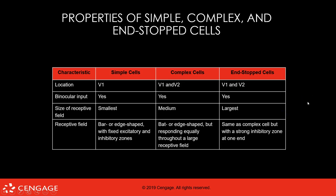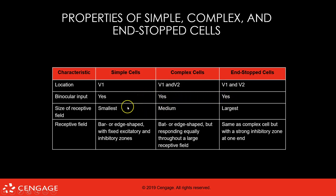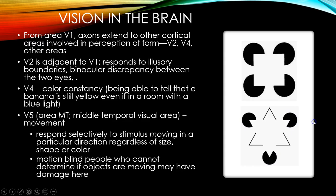You can look at this PowerPoint to compare simple, complex, and end-stopped cells — where they are located, that they all get binocular input from both eyes, and their receptive field sizes: smallest for simple cells, medium for complex, and largest for end-stopped. And what stimulus makes each type of cell fire.